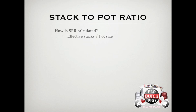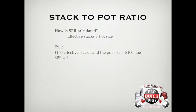Before we talk about why SPR is important and how we can use it, let's run through a few examples. In our first example, stacks are $100 and the pot size is $100, which means the SPR is 1. Pretty easy — $100 divided by $100 is 1. The thing you want to take away from this example is that one bet will get stacks in.